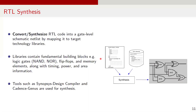The next step is RTL Synthesis or Logical Synthesis. In this step, designers convert the RTL code into a gate-level schematic netlist by mapping it to target technology libraries provided by TSMC or other vendors. These libraries contain fundamental building blocks like logic gates or cells, for example, NAND, NOR, AND, OR, flip-flops, latches, and memory elements, along with timing, power, and area data for each of the cells. The synthesis process ensures that the RTL design is correctly implemented in terms of logic gates and memory components while optimizing power, performance, and area. Primarily, tools from Synopsys and Cadence are used to generate gate-level netlists. This gate-level netlist serves as a basis for the next stage of ESIC design, i.e., physical design and layout generation.